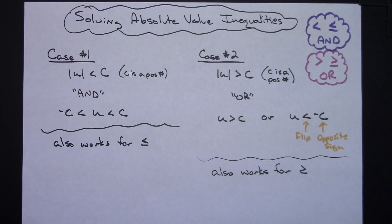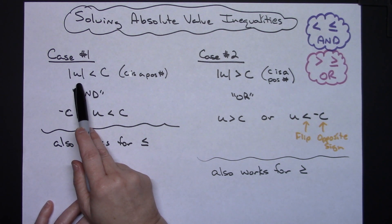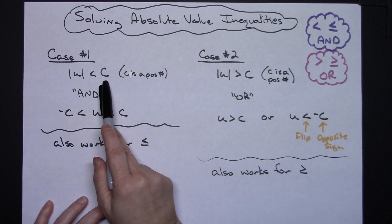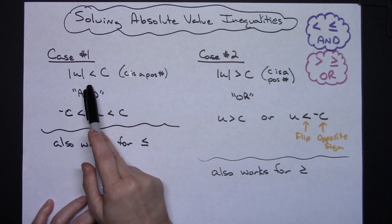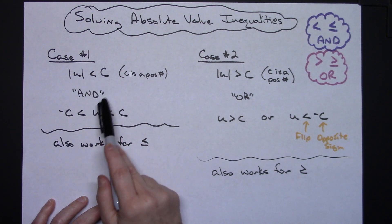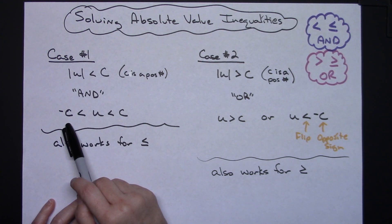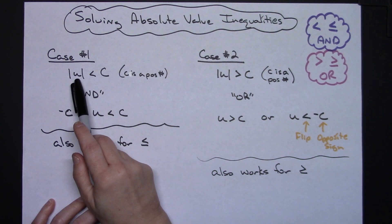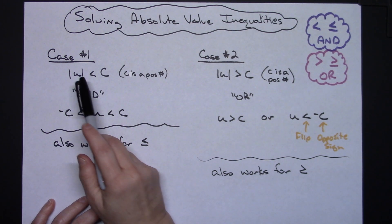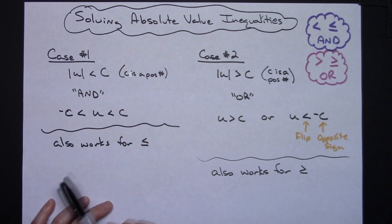We're going to have two scenarios with these absolute value inequalities. Case number one: we have the absolute value of some expression U less than C, when C is a positive number. With it being less than, we know it's an AND, so we set up the inequality with negative C on the left, the expression in the middle, and positive C on the right, then solve.